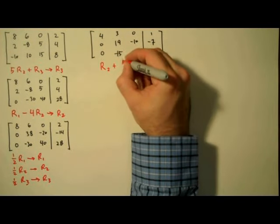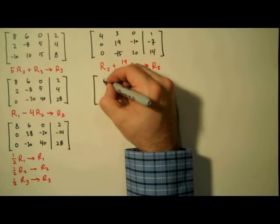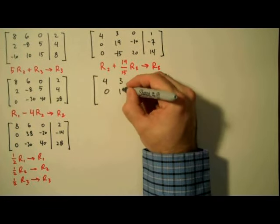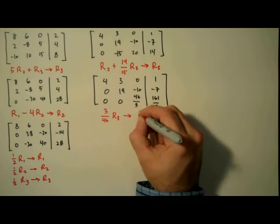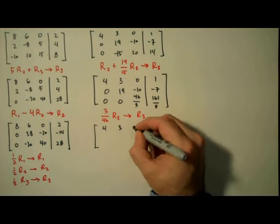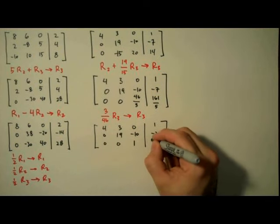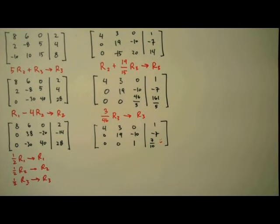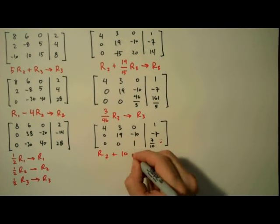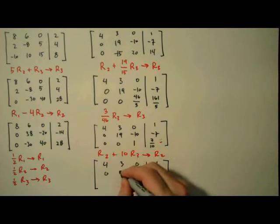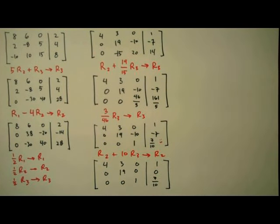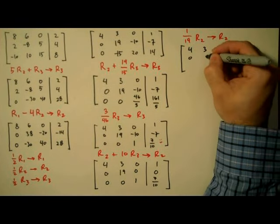Next, we'll take row 2 and add to it 19 15ths times row 3, and we'll replace row 3 with the result. This gives us a 0 in the second column, third row. Now we'll multiply row 3 by 346, and this will give us our first solution, which is why you see a little happy face here. Hey, it's the small things in life, right? Now we're going to take row 2 and add to it 10 times row 3, replace row 2 with the result. This will give us a 0 in the third column of the second row. Next, we'll multiply row 2 by 1 19th, and that gives us our second solution.